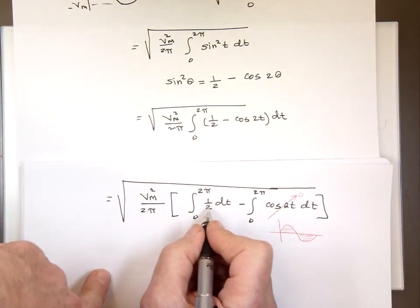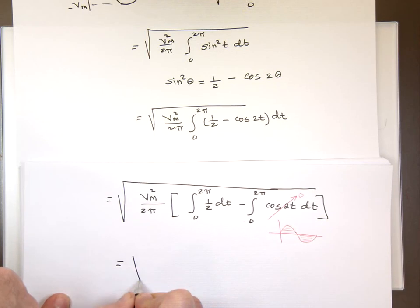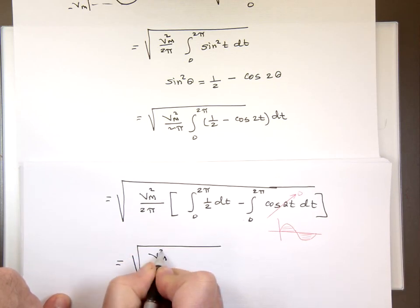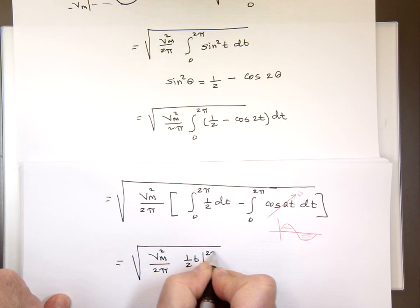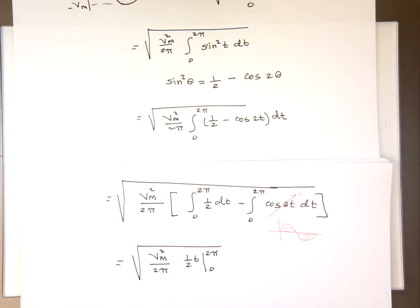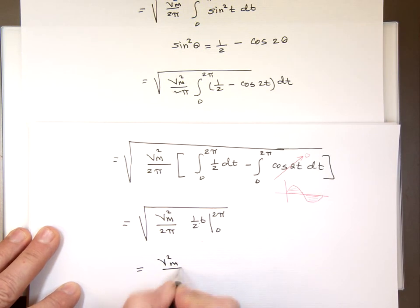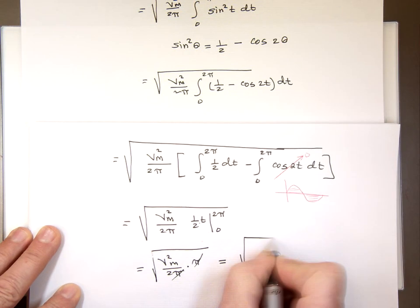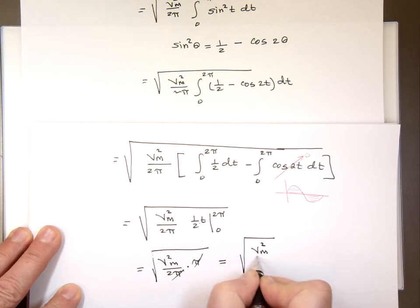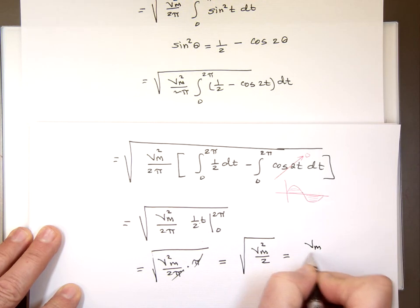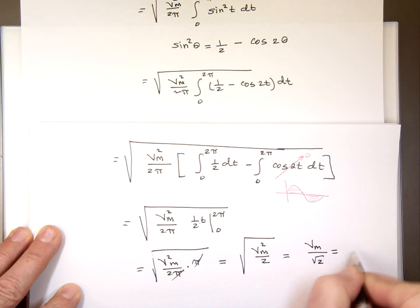So what's the integral of this? That would be 1 half t. And t is going from 0 to 2 pi. So if you plug in, that would be 2 pi times 1 half. That's a pi minus 0. Just a pi. That's V squared max over 2 pi. And the answer to this is only pi. And what do you know? These guys cancel each other out. And you have the V maximum value squared over 2, which you can write as V max over the square root of 2. And that's your RMS value.